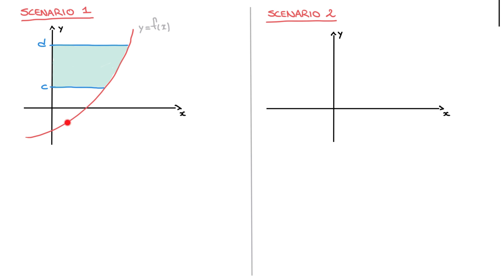When calculating areas enclosed by a curve and the y-axis, the first thing we need to make sure of is that the curve's equation is written as a function of y. In other words, we need to make sure the curve's equation is written as x equals to some function, which I'll call g of y. We may sometimes have to rearrange y equals to f of x to make x the subject. When written this way, the input values are the y-coordinates of the points along the curve, and the output values are the corresponding x-coordinates.